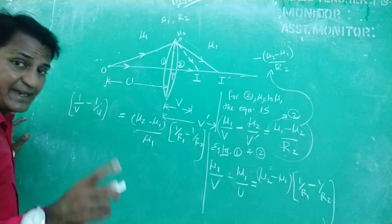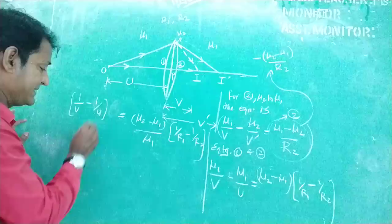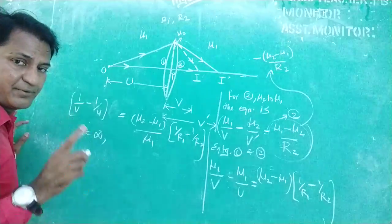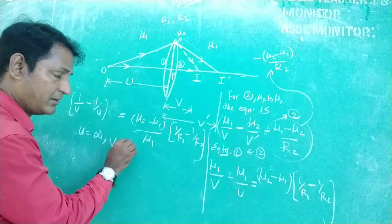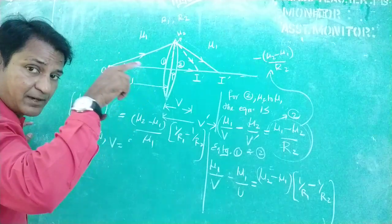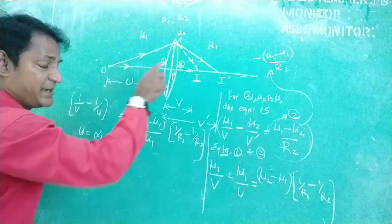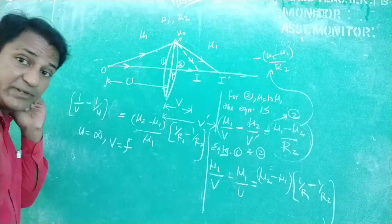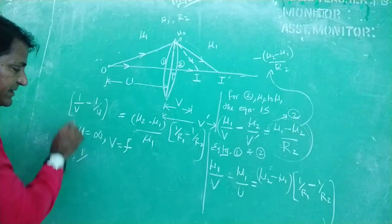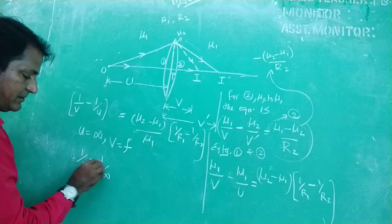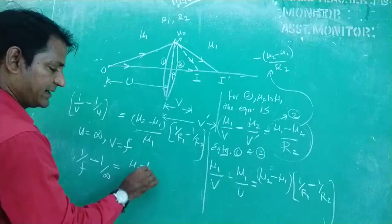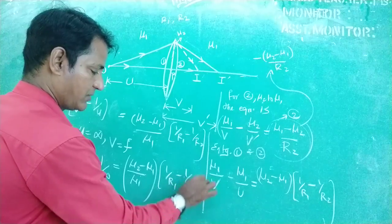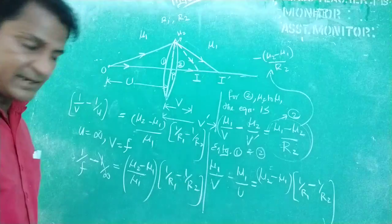If the object is at an infinite distance, that is if U equals infinity, the image will be formed at the principal focus. So V equals f, the focal length. Substituting these values, the equation becomes: 1/f minus 1/infinity equals (mu2 minus mu1)/mu1 times (1/R1 minus 1/R2). Since 1/infinity equals zero, we get: 1/f equals (mu2 minus mu1)/mu1 times (1/R1 minus 1/R2).